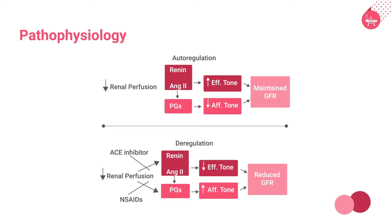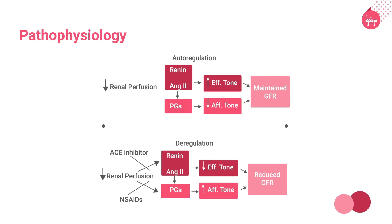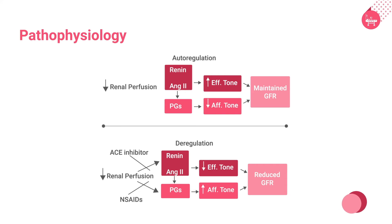Hypovolemia causes prerenal azotemia, which results from gastrointestinal losses, hemorrhage, venous pooling, sequestering of fluid in third spaces, and excessive urinary or skin losses of sodium and water. Patients exhibit signs of hypovolemia, including thirst, diminished skin turgor, mucous membrane dryness, and postural hypotension.